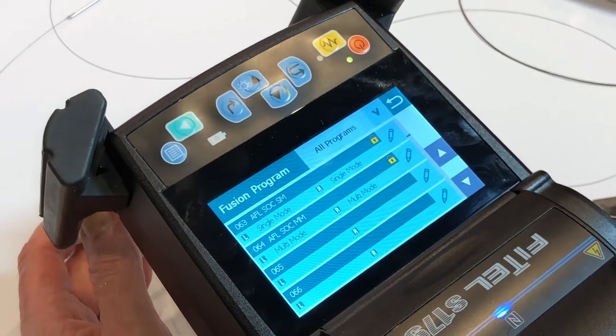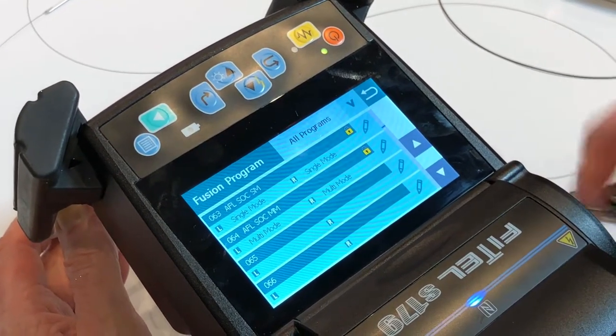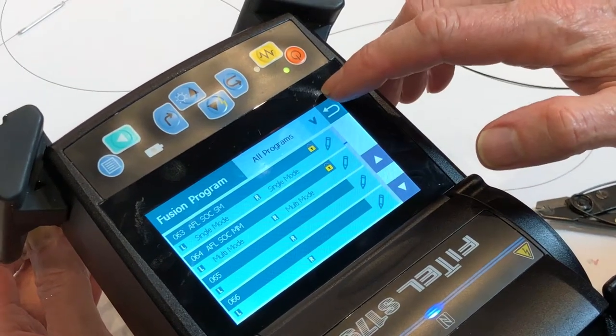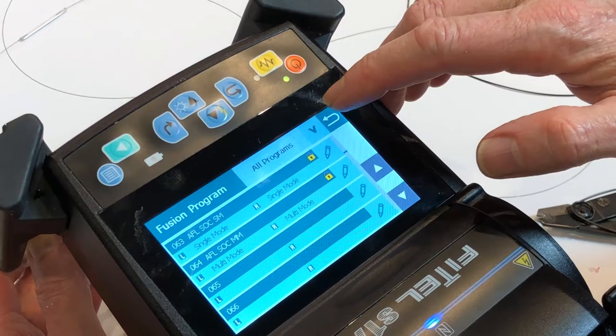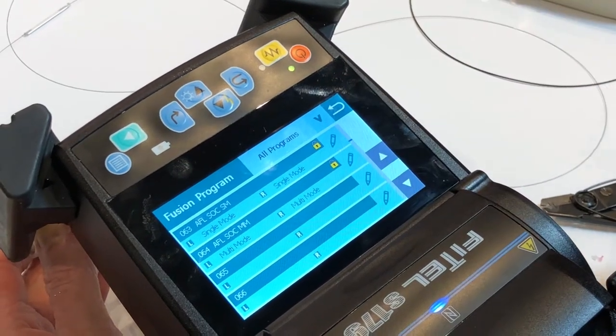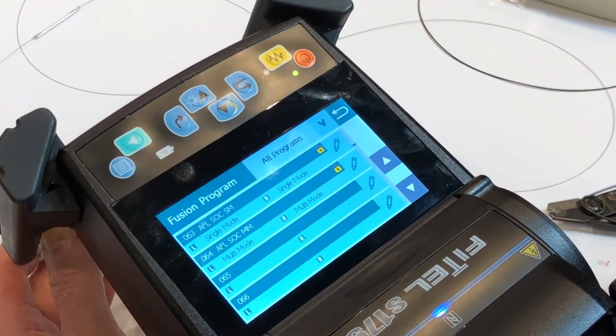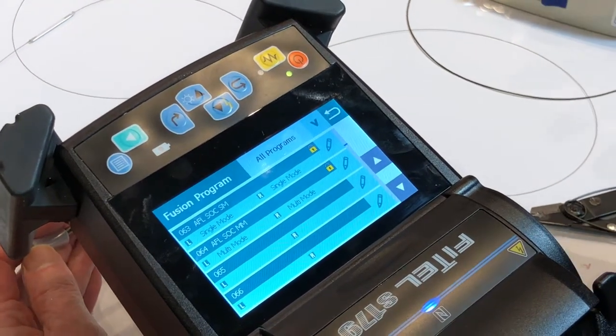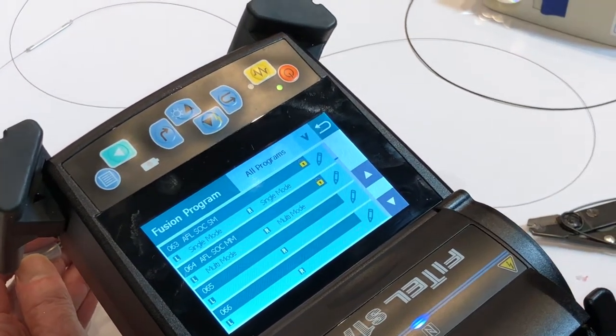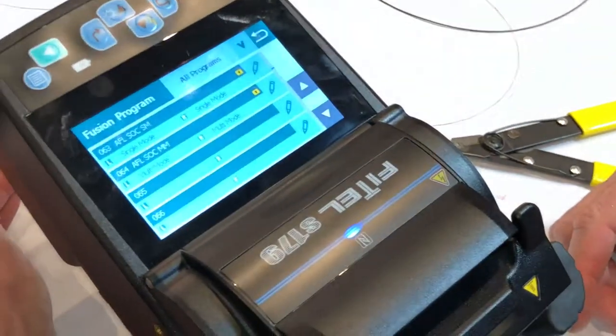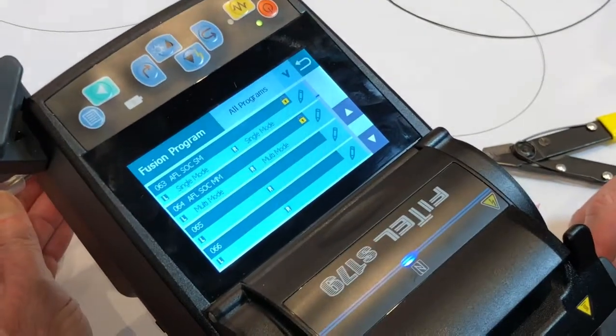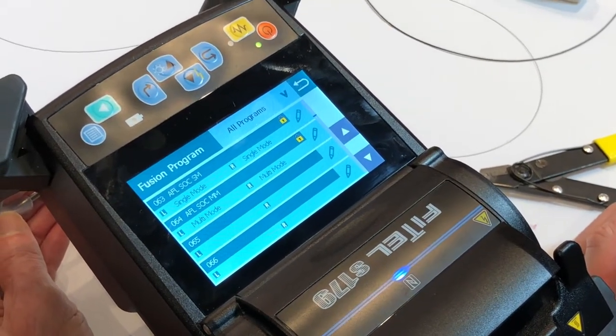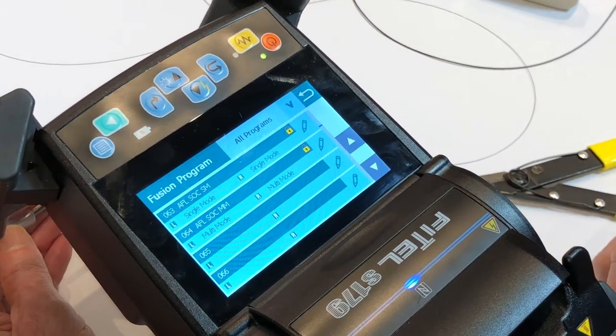This particular type of machine gets used in labs, out in the field for telco splicing, for mining. At the top end of the field game is splicing your submarine cable to land cable when an intercontinental fiber is brought onto land. This is the kind of machine you use for that application.